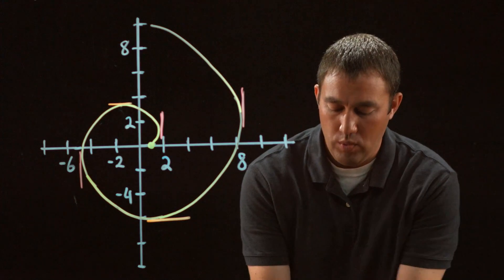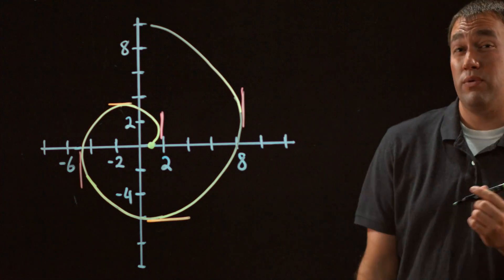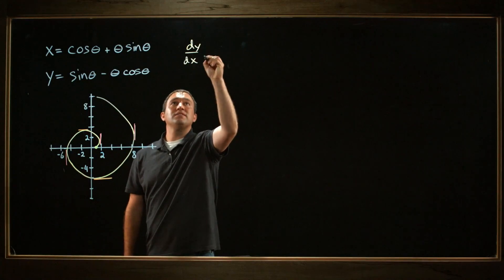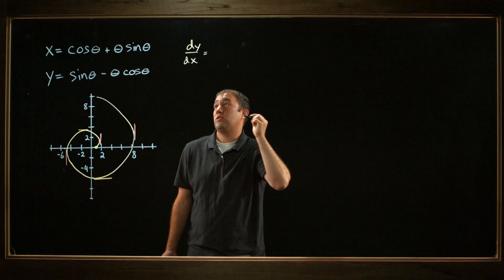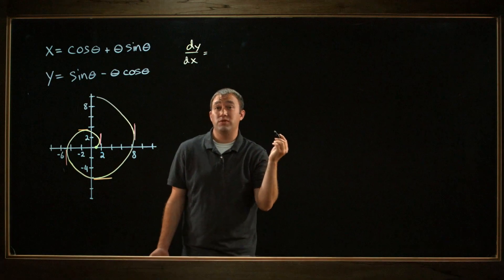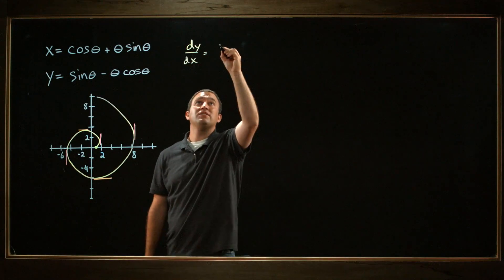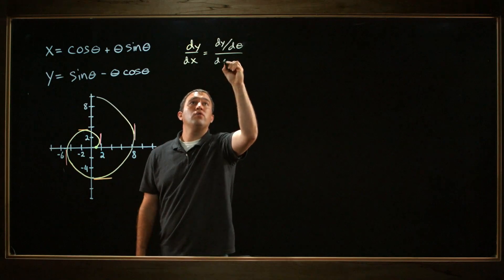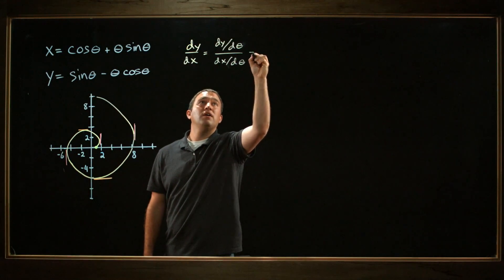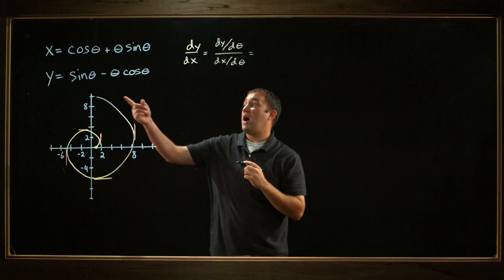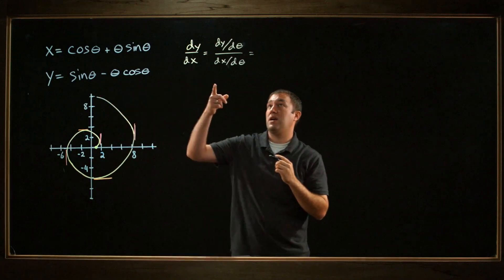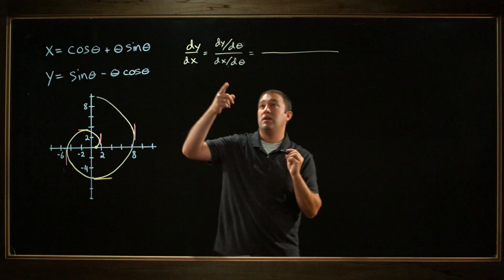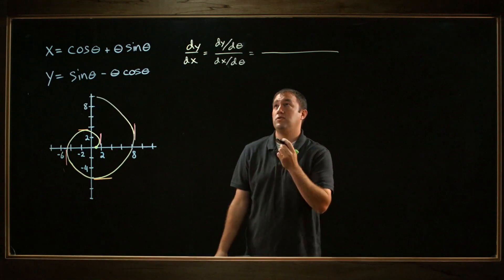What we can do is find the derivative of y with respect to x. dy over dx, since these are parametric equations in terms of theta, I can write that as the derivative of y with respect to theta over the derivative of x with respect to theta. Then I can take the derivative of y with respect to theta as my numerator, and the derivative of x with respect to theta as my denominator.